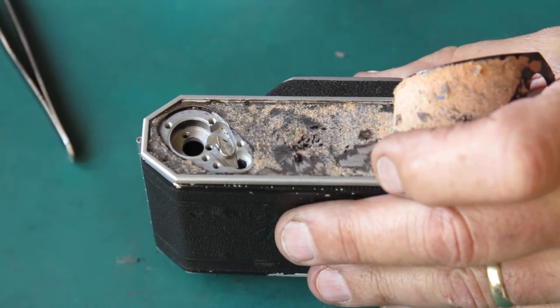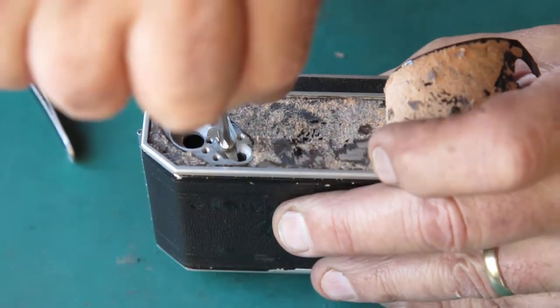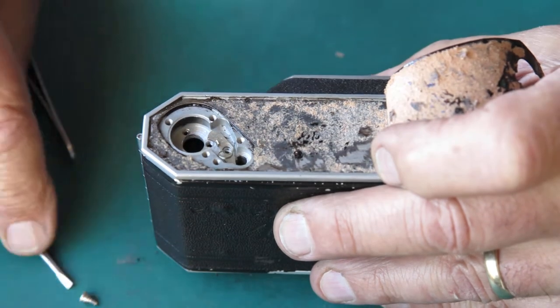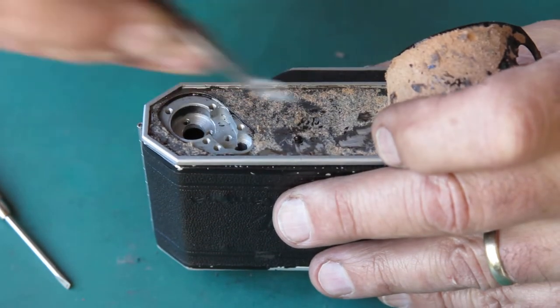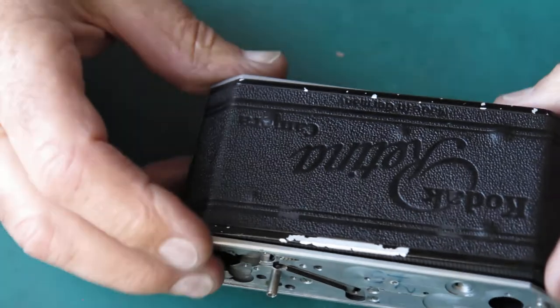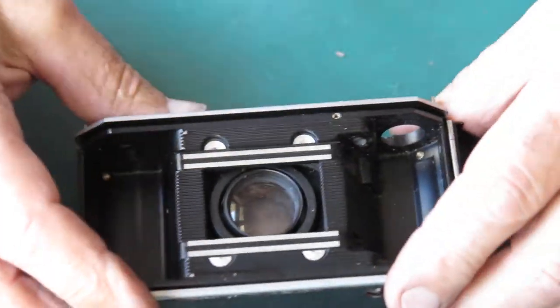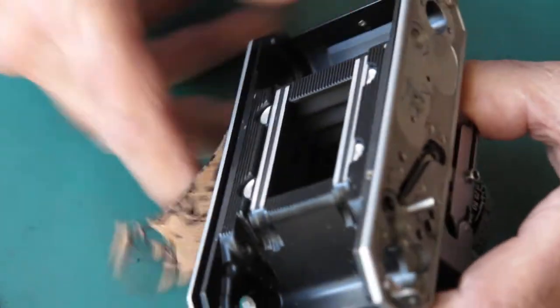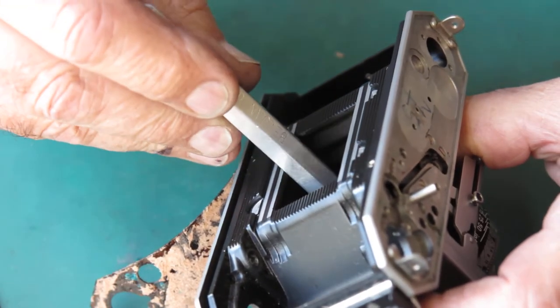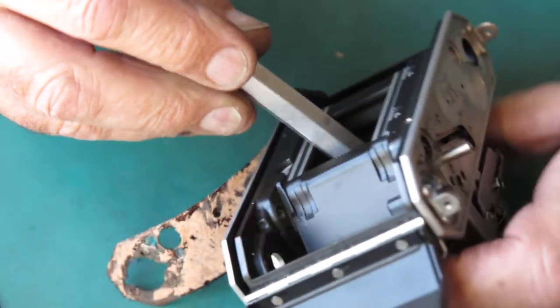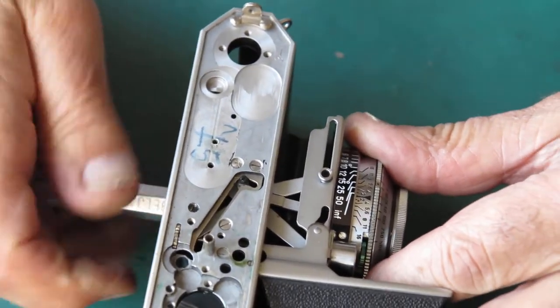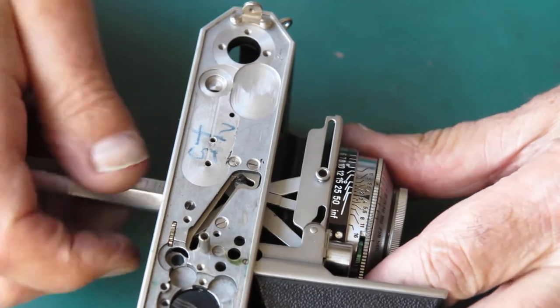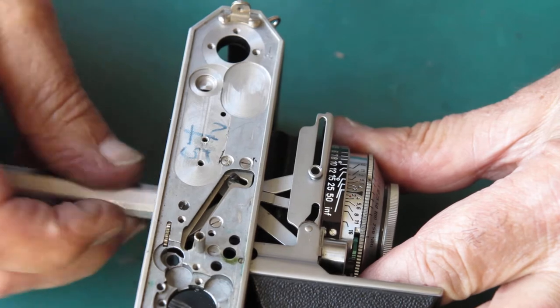This screw holds the spring and the lock lever for the rewind button in place. Now I can lift out the shutter. That was only finger tight because that's how I put it back.